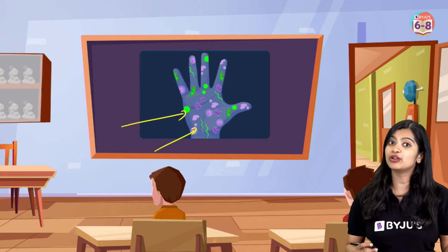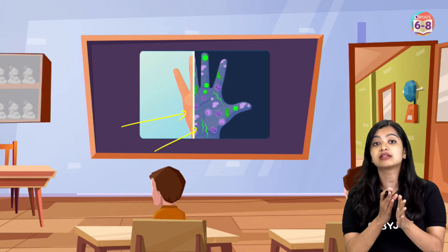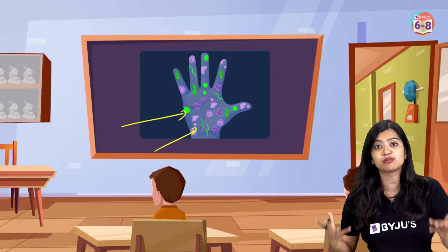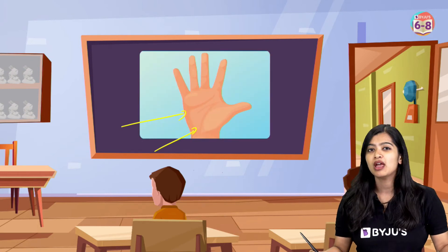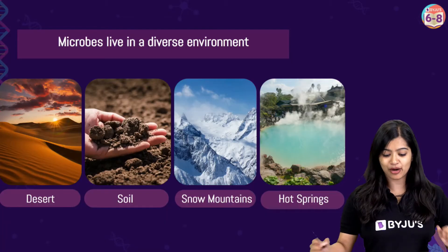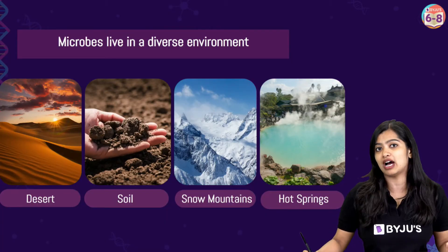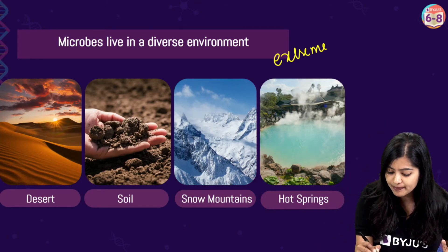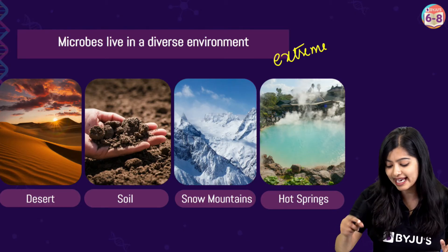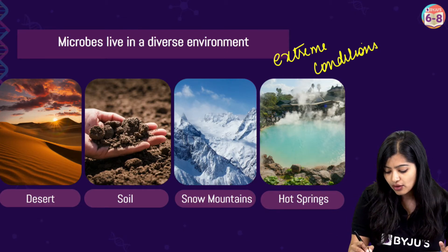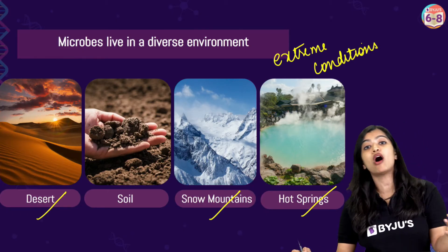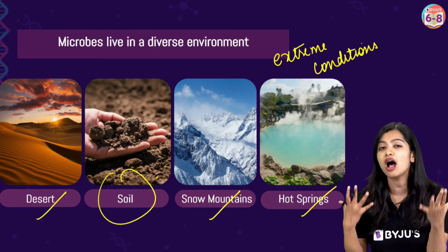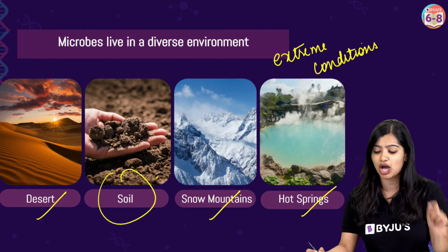Which is why most often you would have heard your parents say: wash your hands thoroughly before you eat food, or cleanse your body regularly so that you get rid of all these microorganisms that are settling on the surface. Apart from this, microorganisms are also found in diverse environments with extreme conditions — in the desert, snowy mountains, hot springs. In the soil also, there are large numbers of microorganisms present.